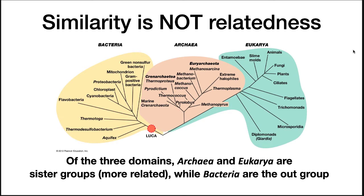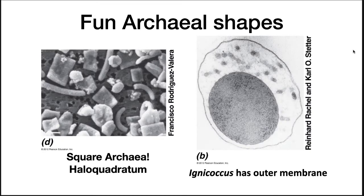We will talk more about this in Module 4, but for now we will look at the structural differences between the three domains. We will only look at a few general and important differences between archaea and bacteria, but these unusual microorganisms can have all sorts of fun shapes. Halo quadratum can form flat square shapes, while Ignococcus has an outer membrane that loops out from the cytoplasmic membrane quite spectacularly.